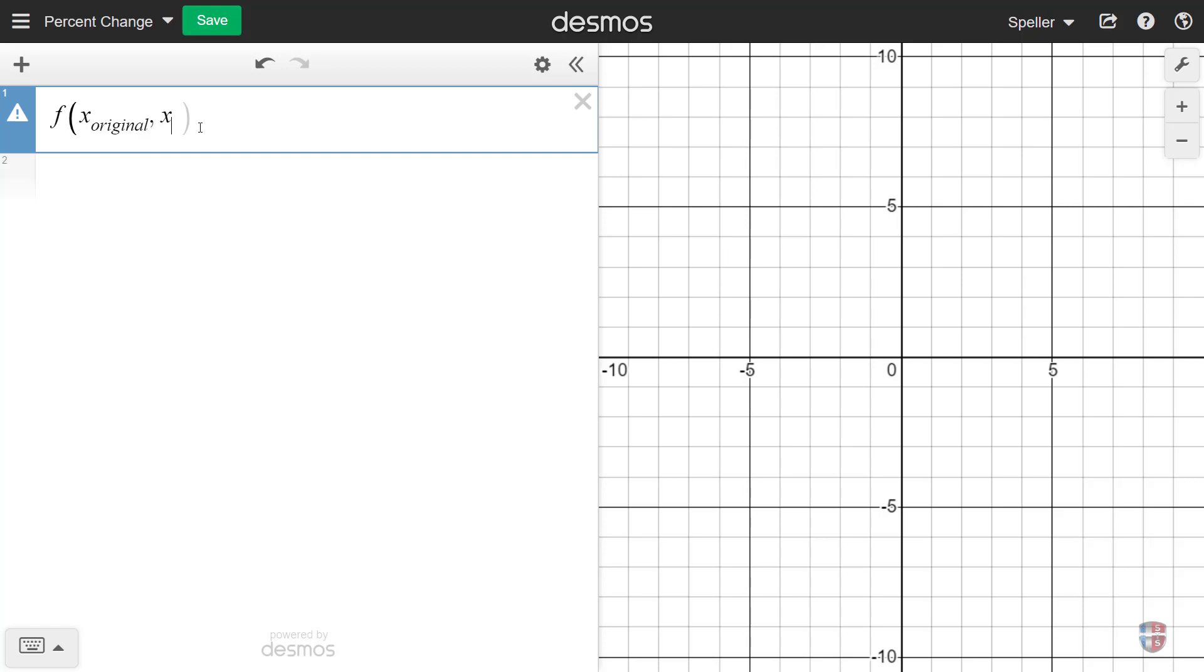And the second input is going to be the new value, so I'm going to call that x underscore new. And I'm going to set that equal to the expression that we use to calculate the percent change. So that's going to be the difference of the new and original values, so x underscore new minus x underscore original, and we're going to divide that by the original value.